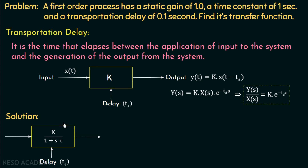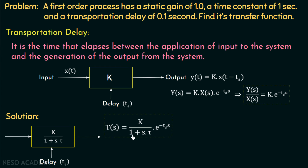Consider a first order system having transfer function k / (1 + s·τ). This is the general form of the transfer function of a first order system, where k is the static gain (DC gain) and τ is the time constant. If td is the transportation delay, then the transfer function becomes k / (1 + s·τ) · e^(−td·s), since when transportation delay is present, e^(−td·s) is multiplied into the transfer function.